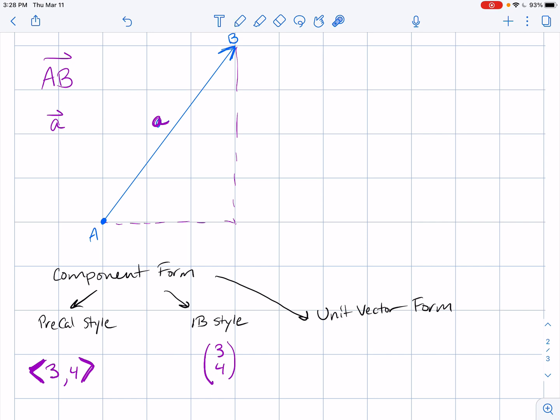In IB we tend to write it 3 over 4. I definitely prefer this because I find it easier to do the operations. You can have the stuff on the top works together and stuff on the bottom, whereas here it's a little trickier. I try and do precal in precal style, I try and do IB in IB style.